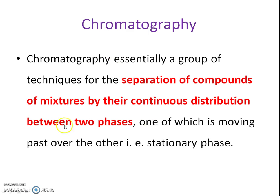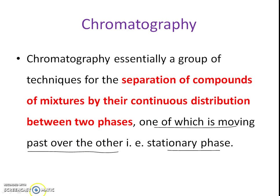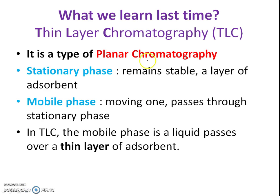Thin layer chromatography is one type of chromatography. Chromatographic methods are mostly used for the separation of compounds in a mixture depending upon their distribution into two phases — one is a stationary phase and another is a mobile phase which passes through the stationary phase. The basic purpose of chromatography is separation, and we consider these two phases.